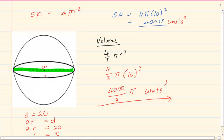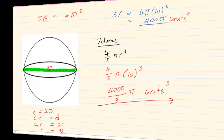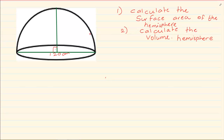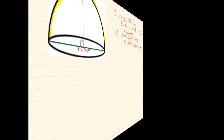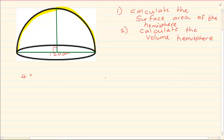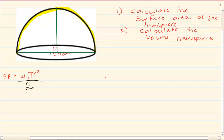All we are doing is literally cutting the sphere in half. In order to calculate the surface area of a hemisphere, we are going to use a sphere formula. Remembering from your previous videos, the formula for the surface area of a sphere was 4πr². But we don't want a sphere — we want half of it. So we divide by 2, giving us 2πr².